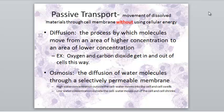You might think of osmosis in terms of plant cells. When there's a lot of water outside the plant cell, the water moves into the cell and the cell will swell and get larger as it fills with water. If there's a lower water concentration outside the cell, the water will move out — from high concentration inside to low concentration outside — and the cell will shrink. This might give a plant a wilted look.